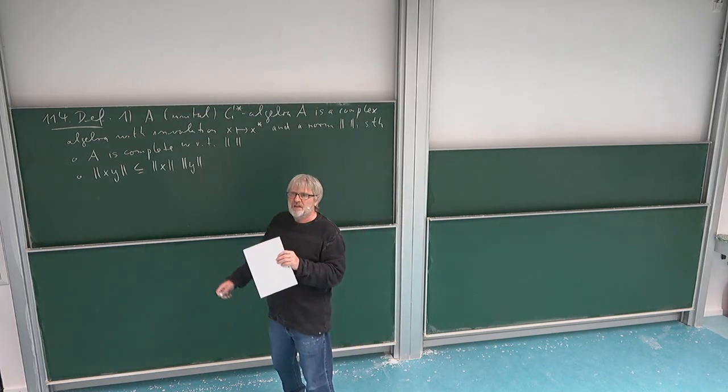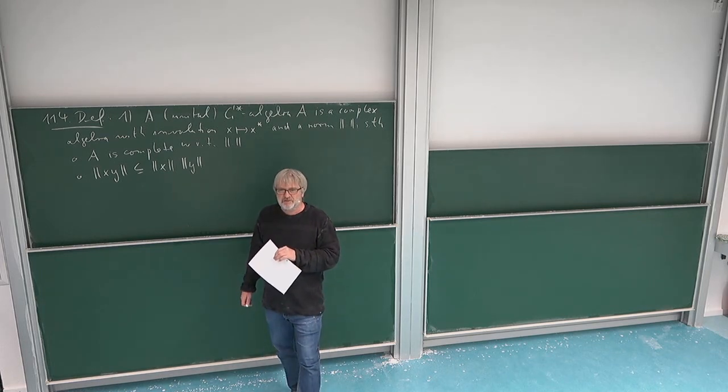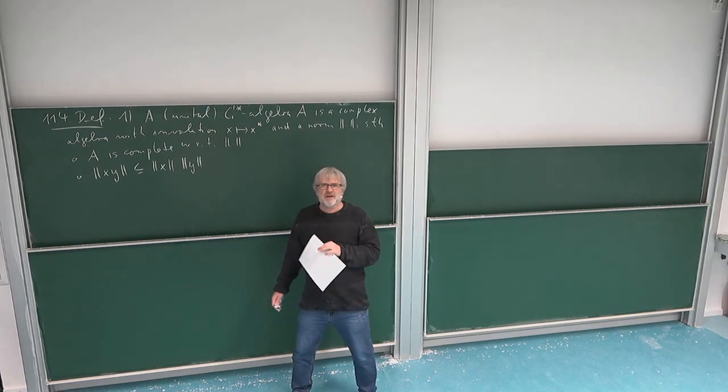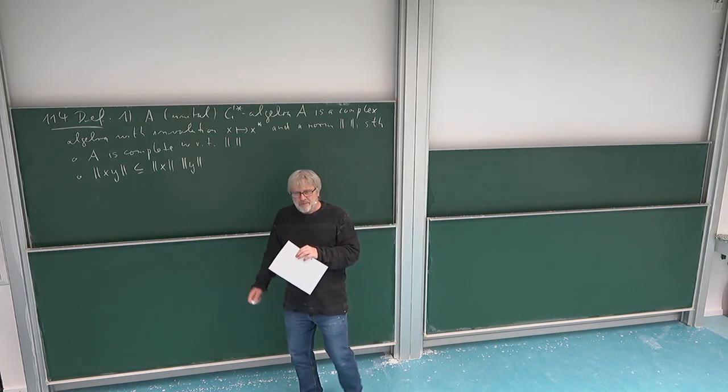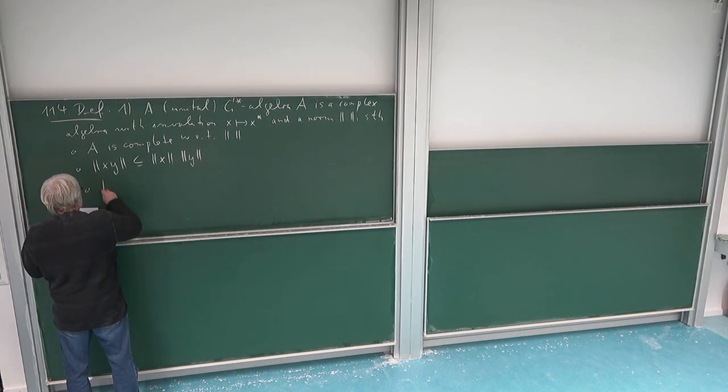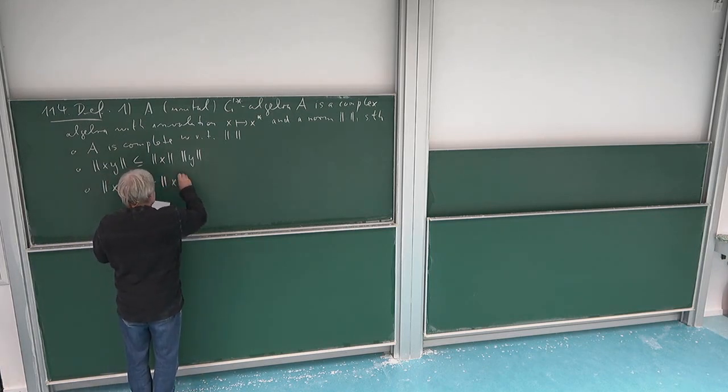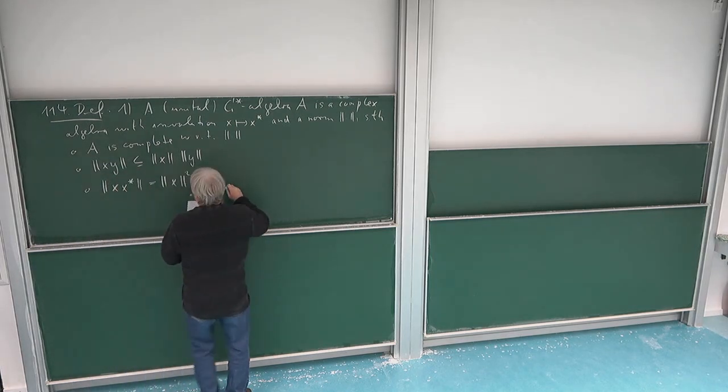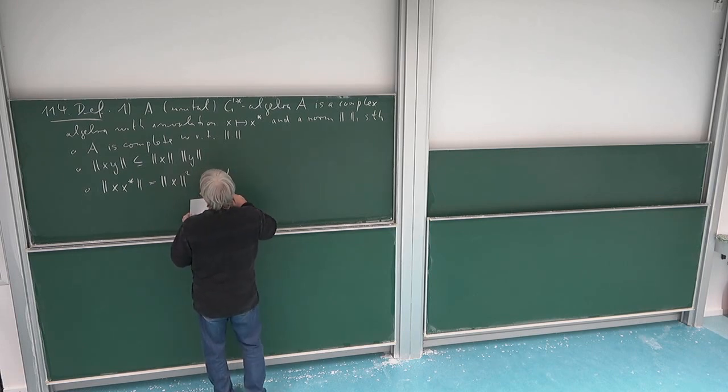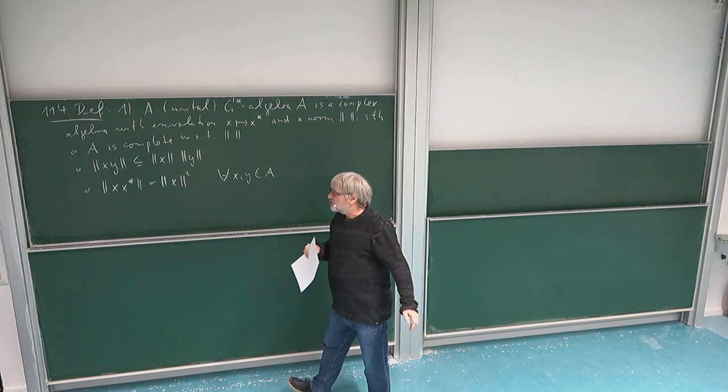And then of course it should go nicely together with the star also. This means of course the norm of x star should be the norm of x, and this would be something which we call a Banach star algebra. But the C-star algebra is more, so namely there is a stronger condition which is very specific. Namely x times x star, the norm of this has to be equal, not just inequality but equal to the norm of x squared.